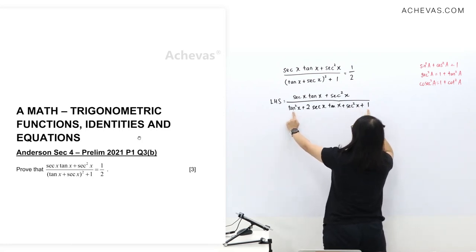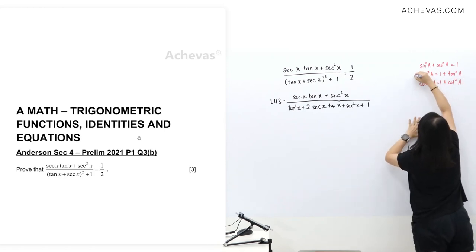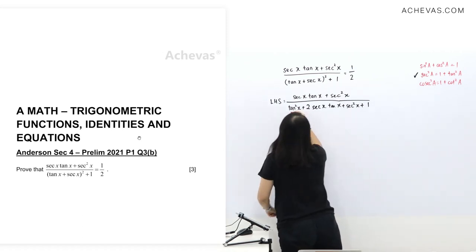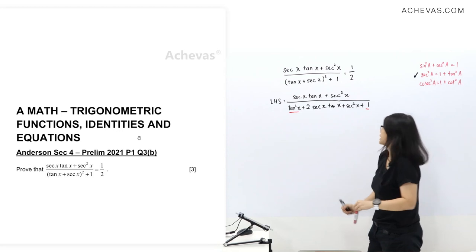Tangent square x plus one, which is this one. So we're going to use this to change this and this item. Next step.